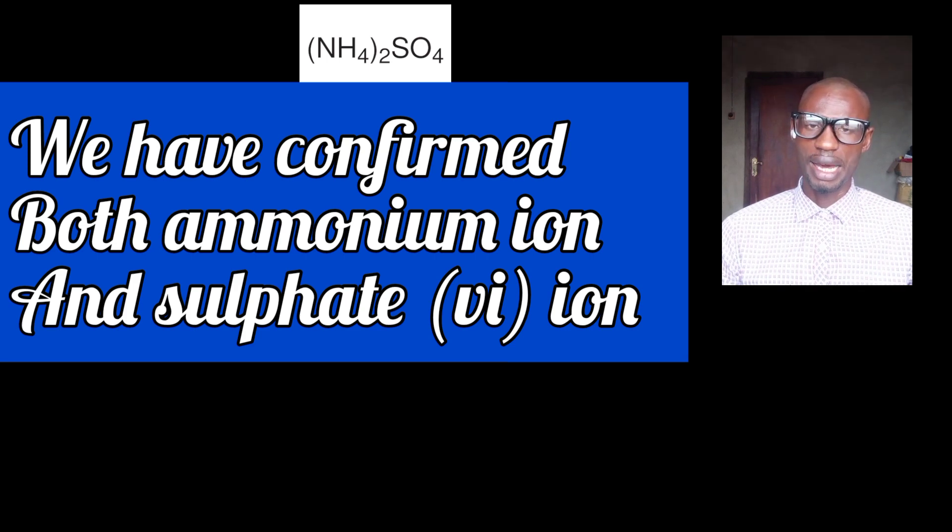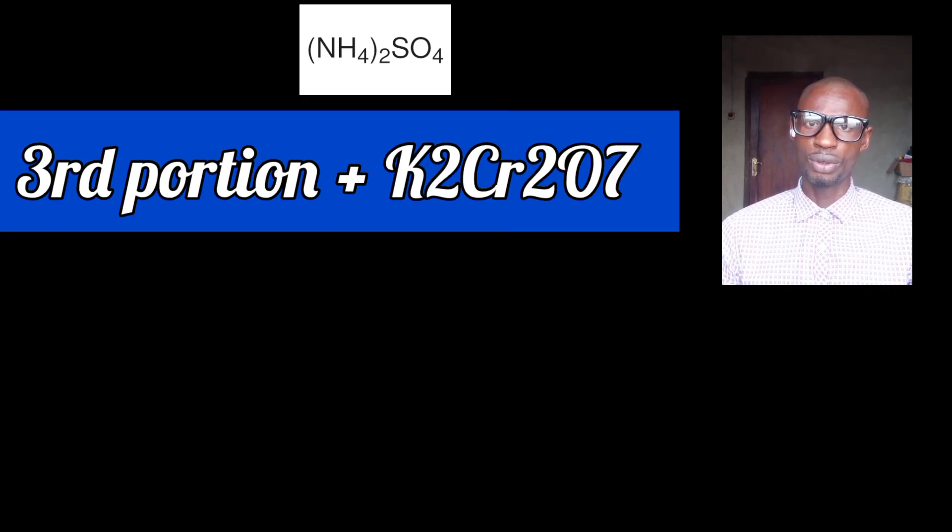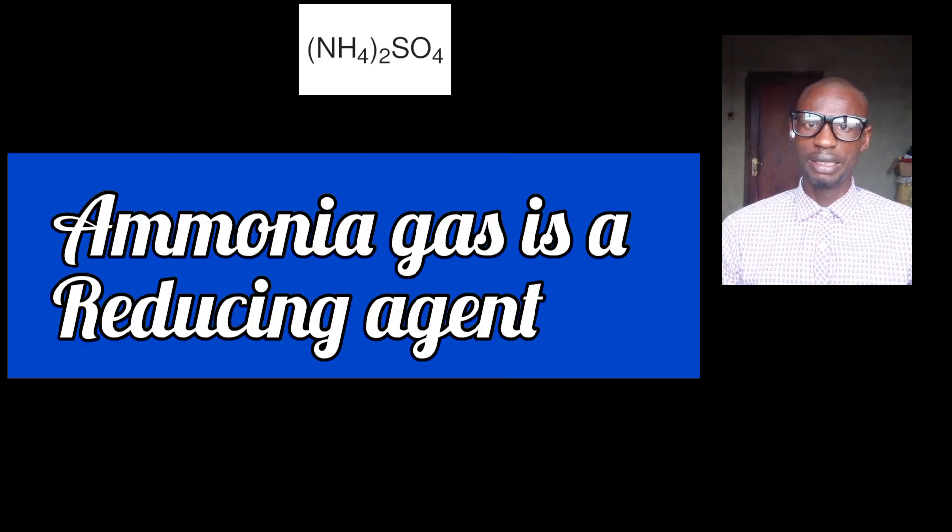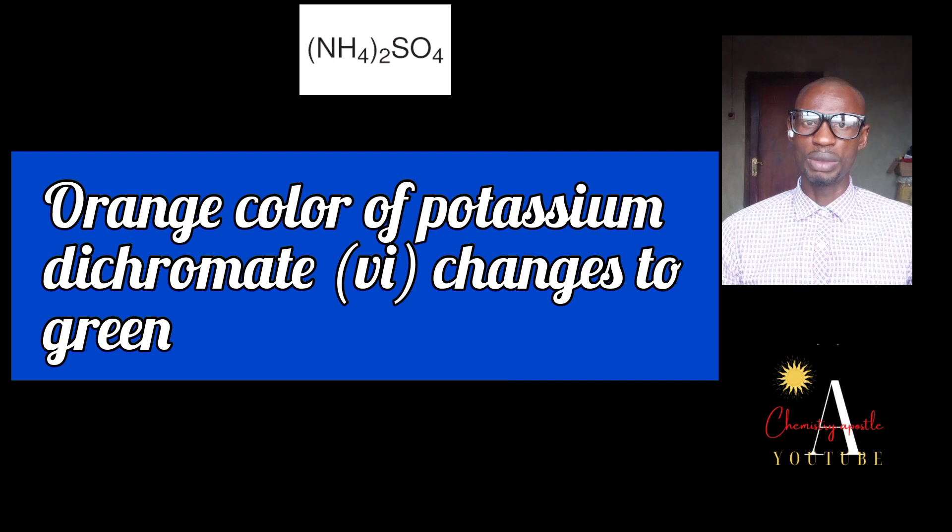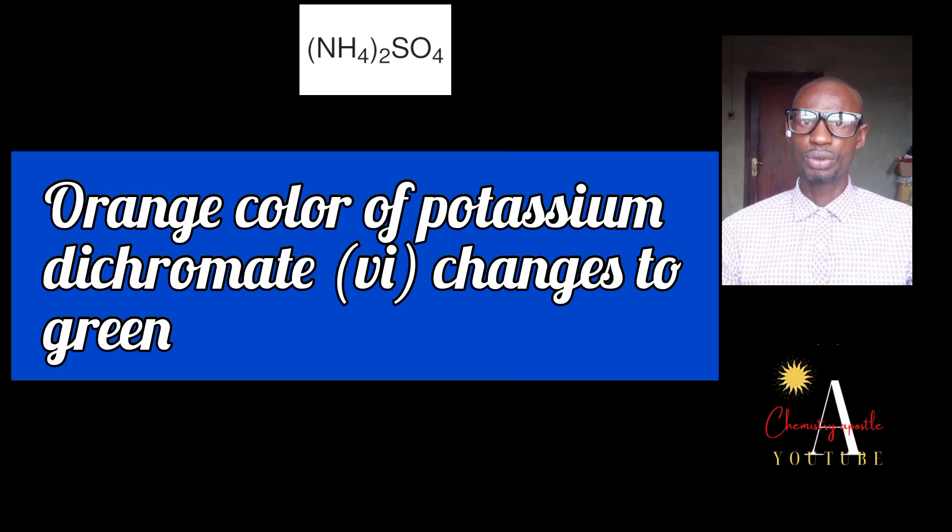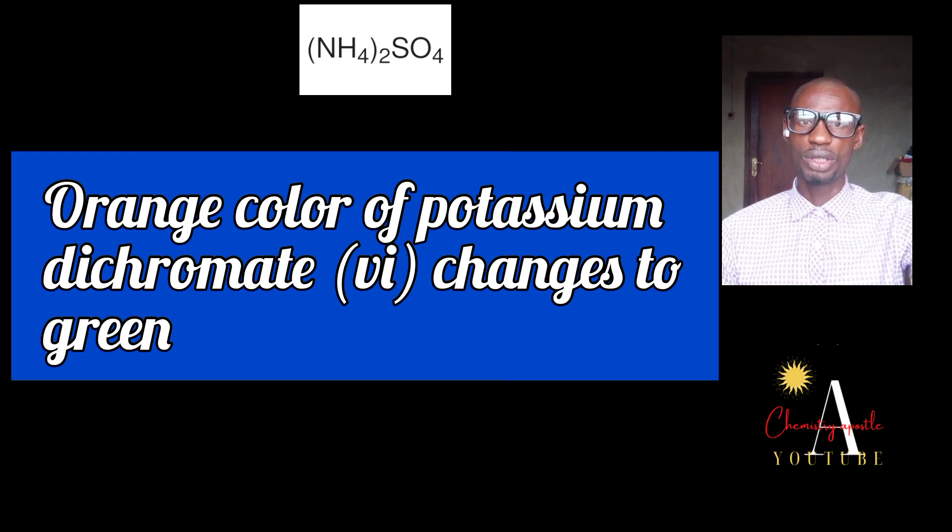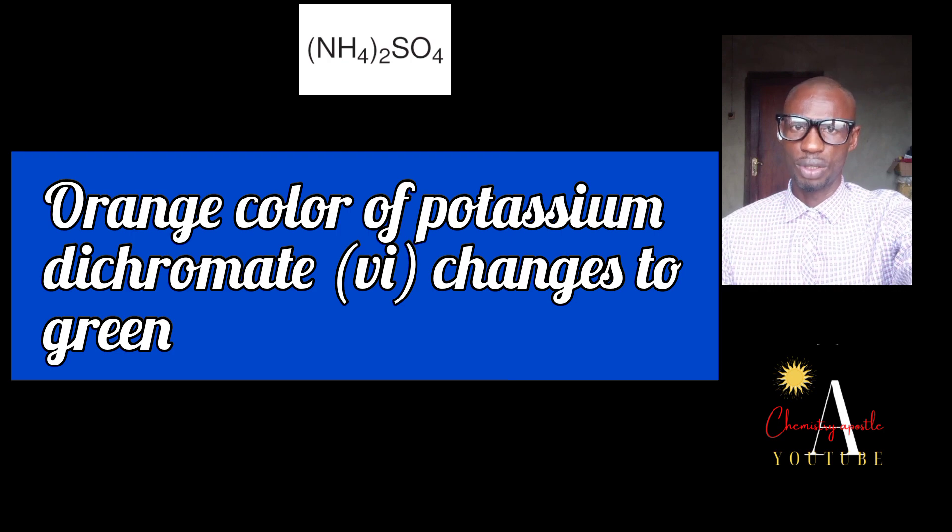To the third portion, add potassium dichromate VI, that is K2Cr2O7. And your observation, because you have confirmed ammonia gas, in the theory of practical, ammonia gas is a reducing agent. So automatically, a reducing agent will change the orange colour of potassium dichromate to green. And that is why the orange colour of potassium dichromate is changed to green. That's the observation. The orange colour of K2Cr2O7 will change to green. And your inference will be solution C is a reducing agent. At the end of the class, I'm going to be dropping the remedy according to WAEC standard, the errors and the remedy when students commit during salt analysis.